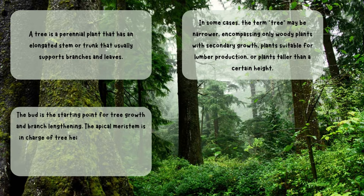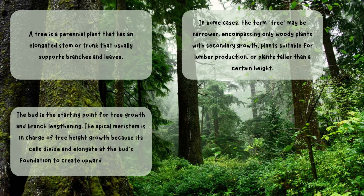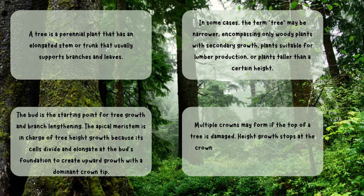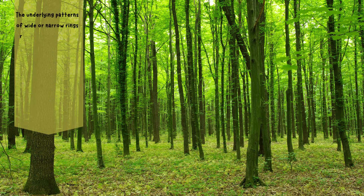The apical meristem is in charge of tree height growth because its cells divide and elongate at the bud's foundation to create upward growth with the dominant crown tip. Multiple crowns may form if the top of a tree is damaged. Height growth stops at the crown tip because some conifers cannot produce these growth cells. The underlying patterns of wide or narrow rings record the year-to-year fluctuations in tree growth.